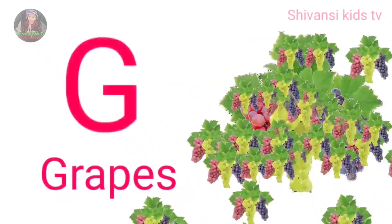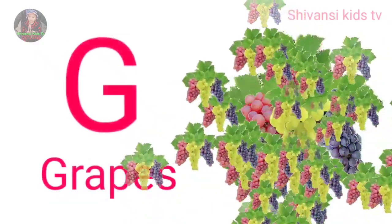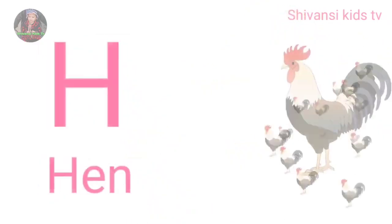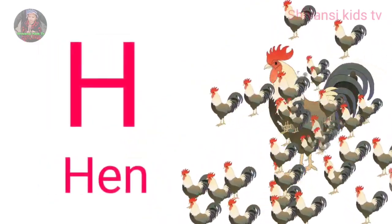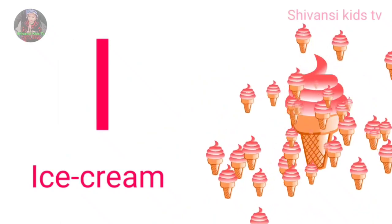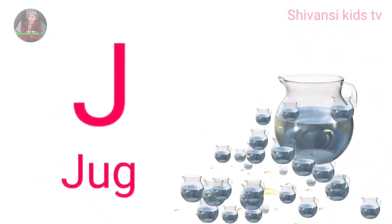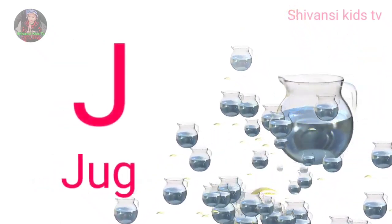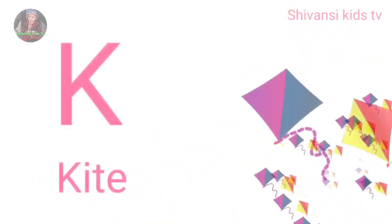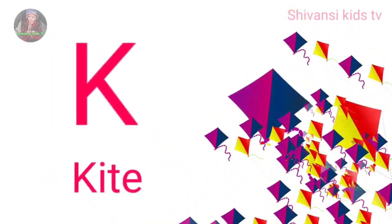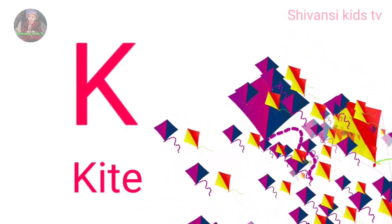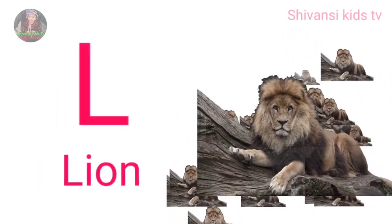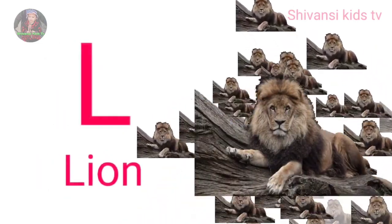G for grapes, H for hand, I for ice cream, J for jug, K for kite, L for lion.